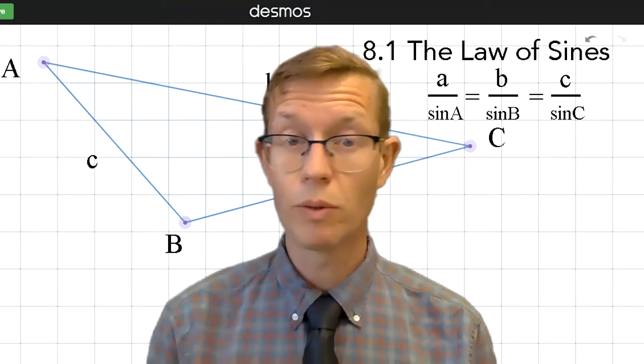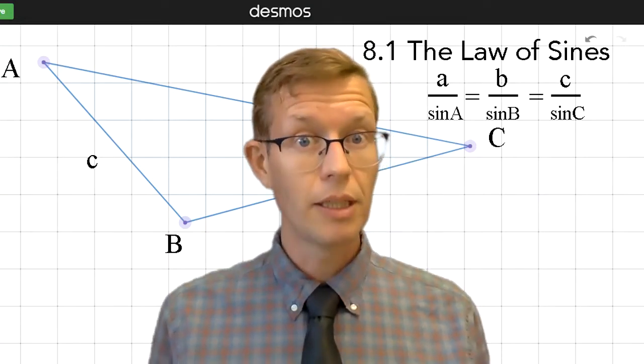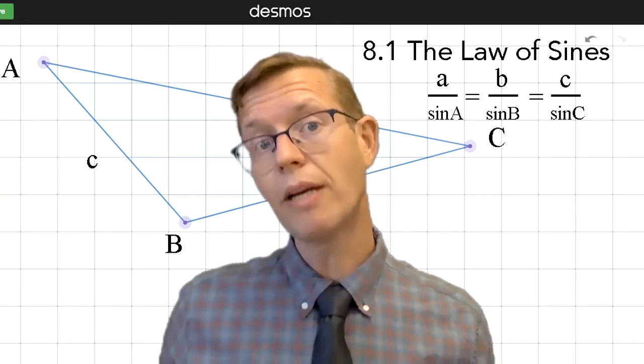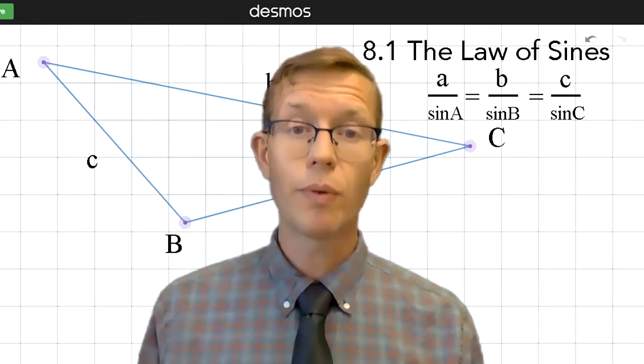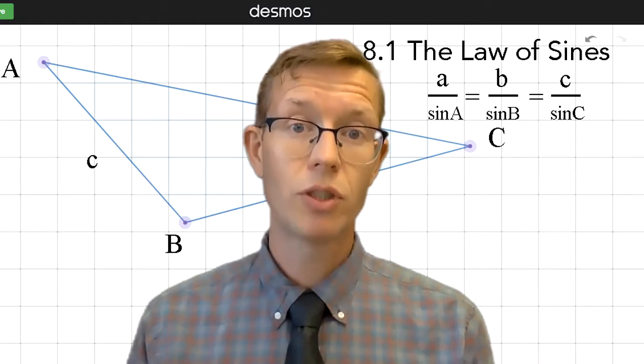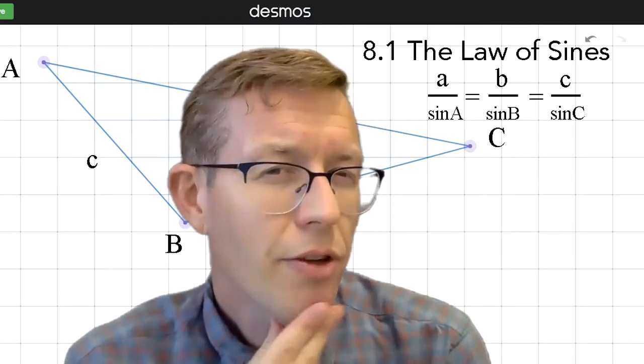Side-side-angle, which is not really a way to prove that triangles are congruent, but it is a way to solve a triangle. We can find all six parts of a triangle, the three sides and the three angles, if we were given any three parts of a triangle.